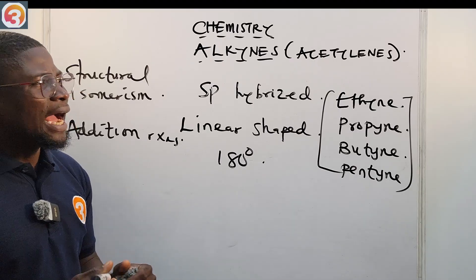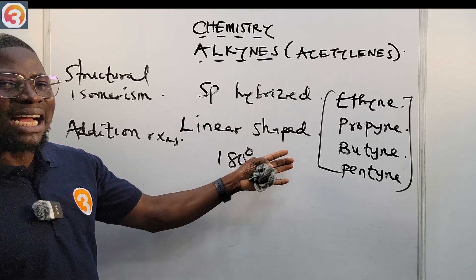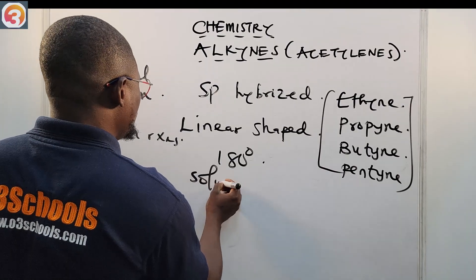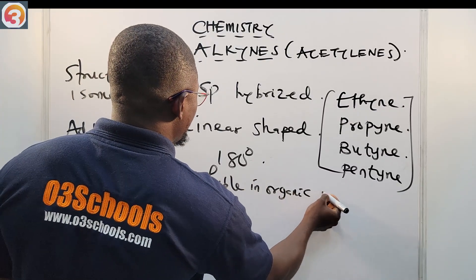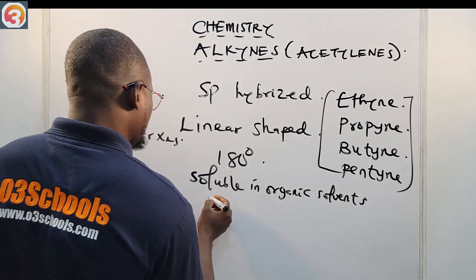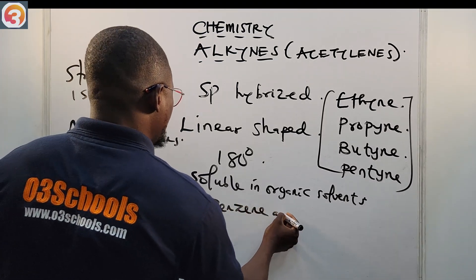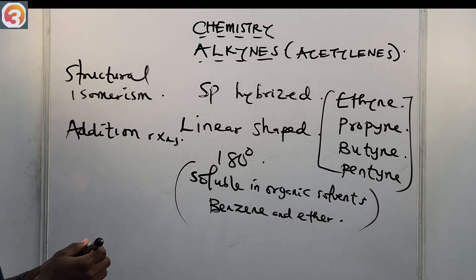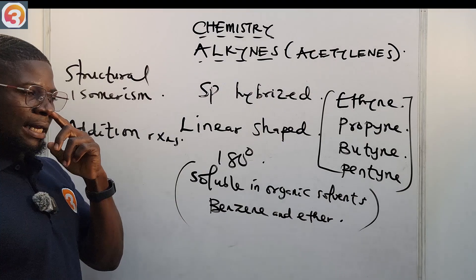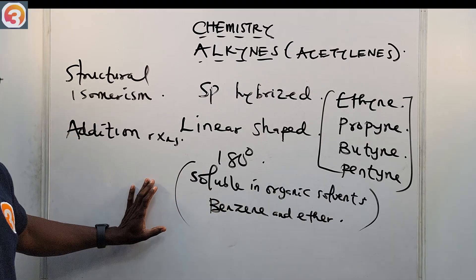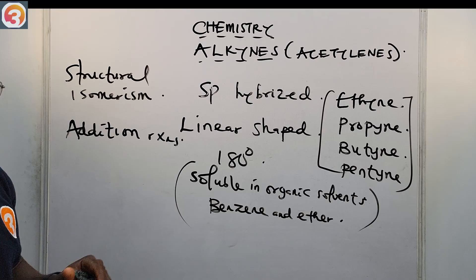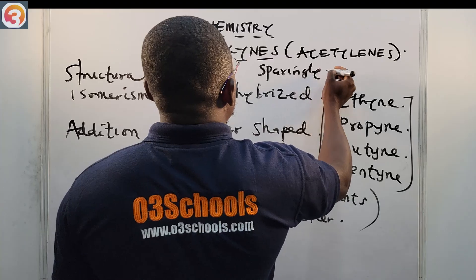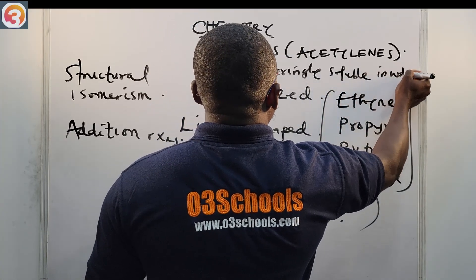Another important property: alkynes are soluble in organic solvents like benzene and ether. They are sparingly soluble in water.